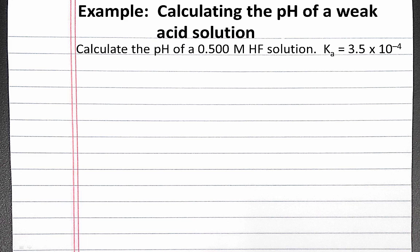In this example problem, we'll calculate the pH of a weak acid solution. The problem reads: calculate the pH of a 0.5 molar HF solution. The Ka value is 3.5 times 10 to the negative fourth.